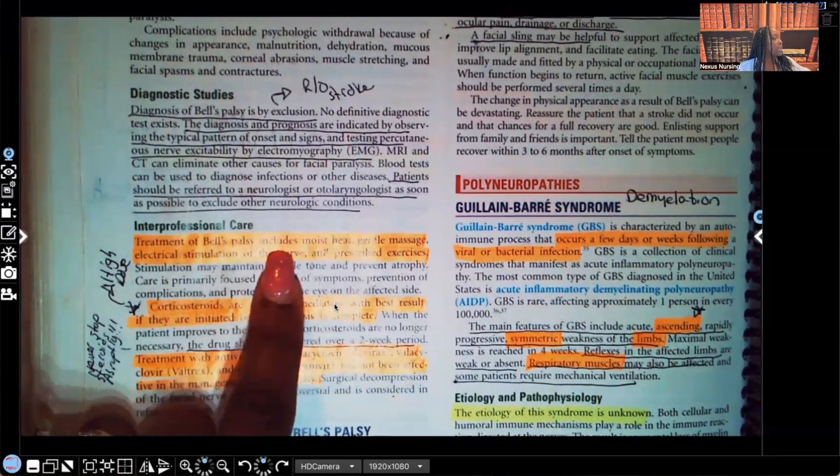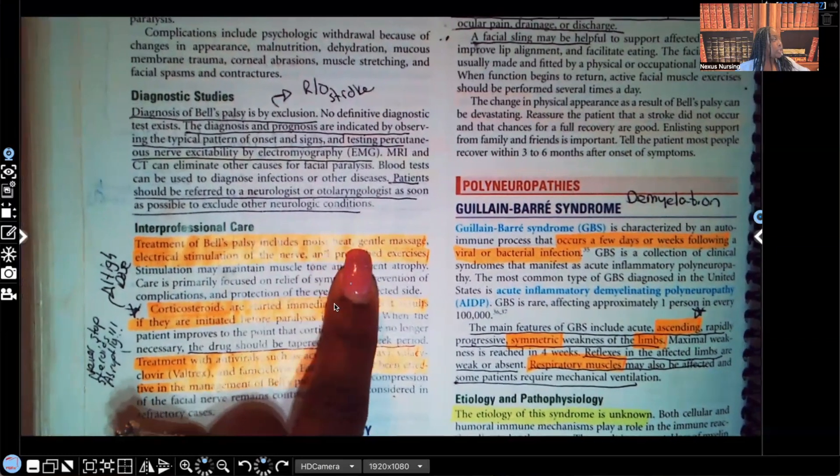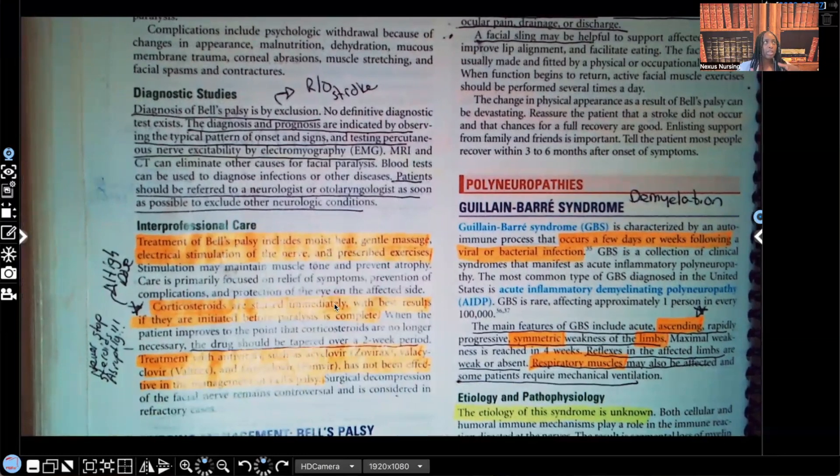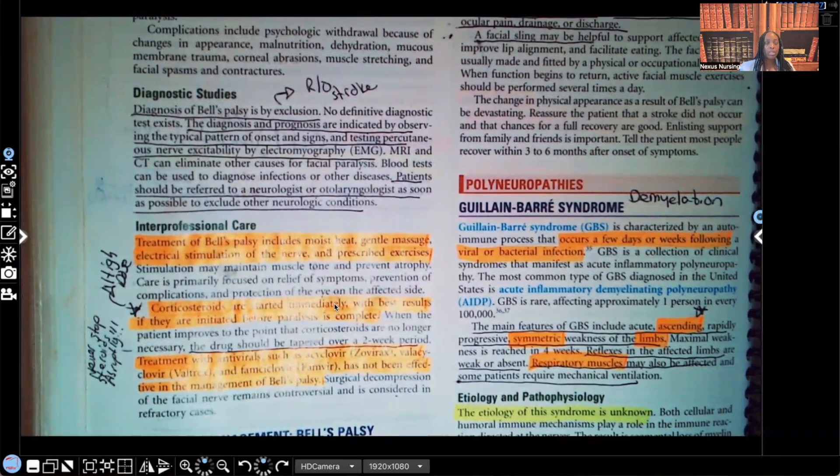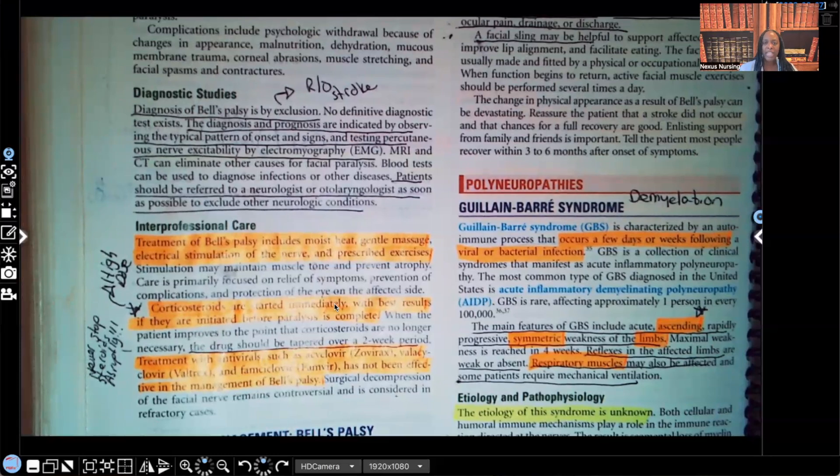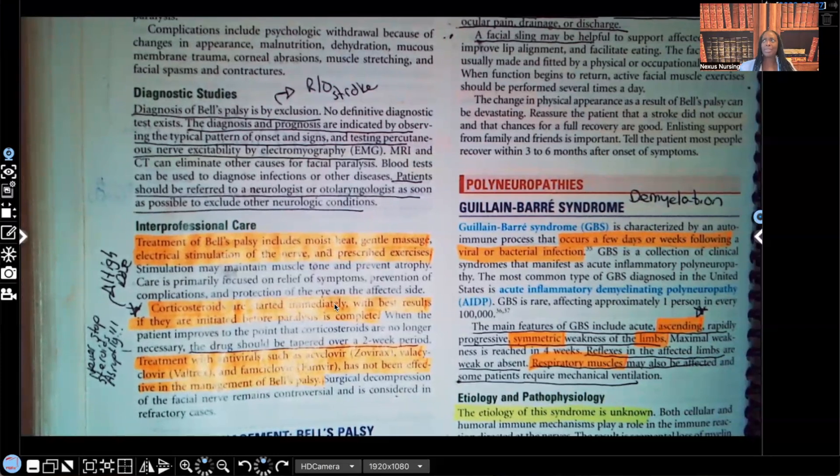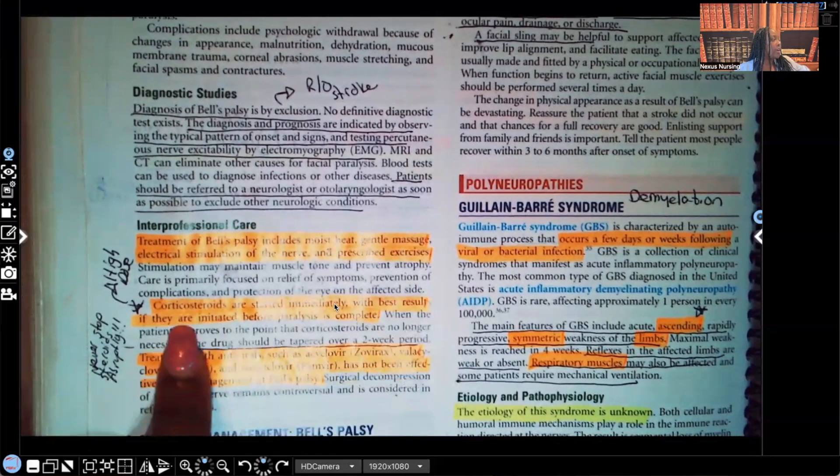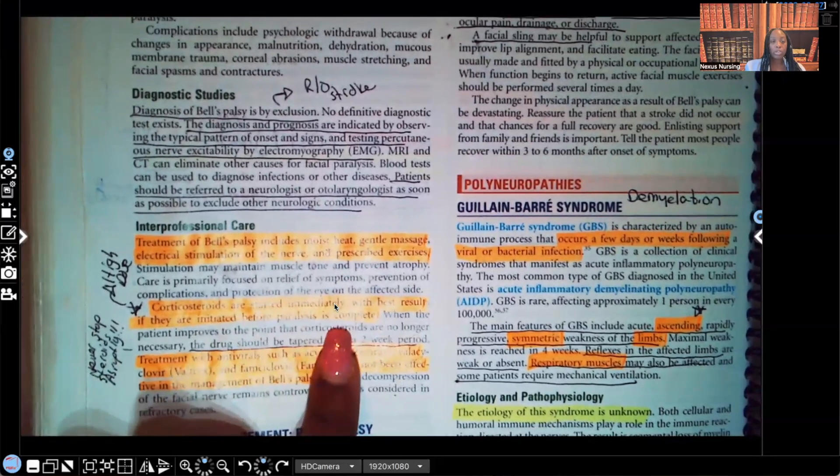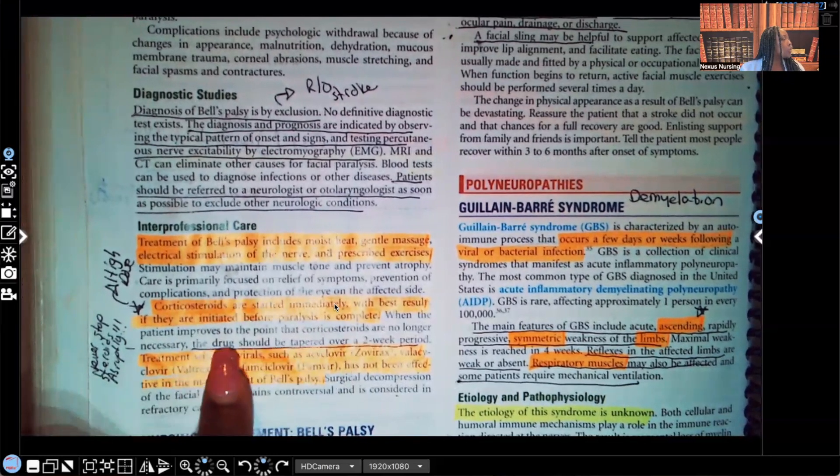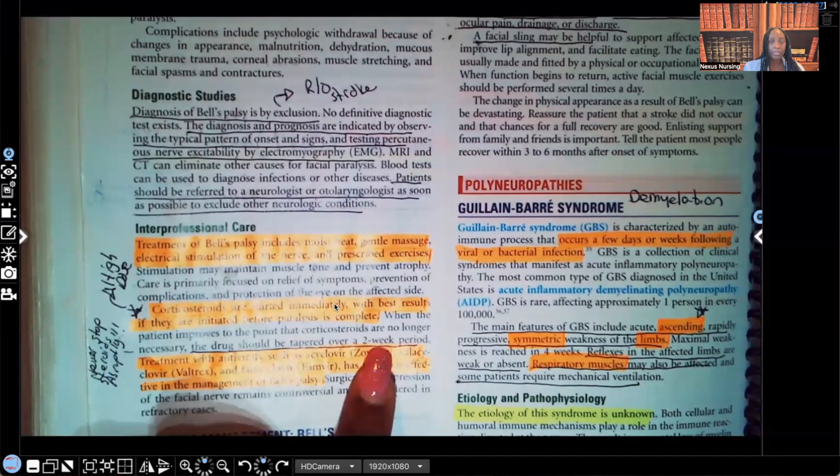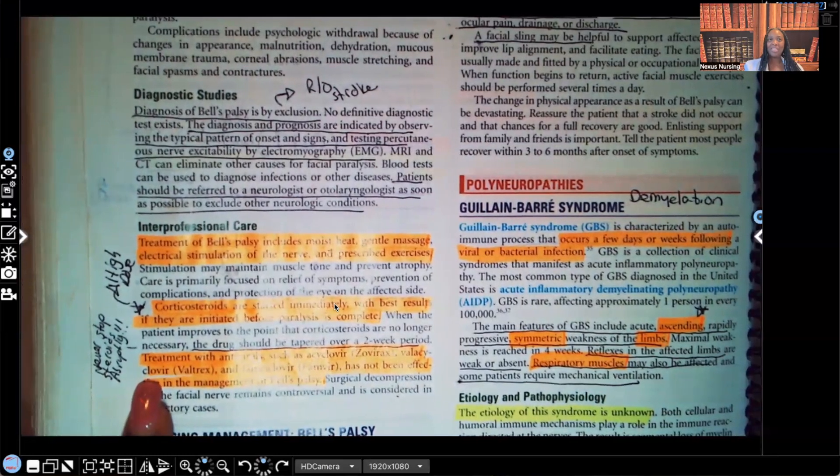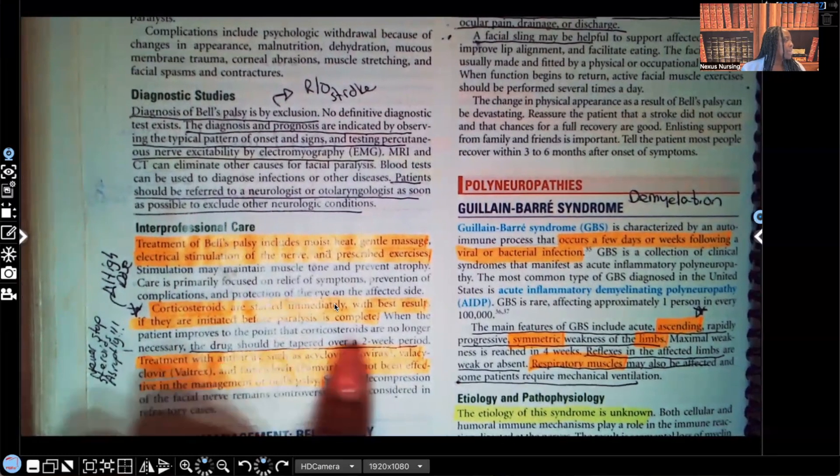It says treatment of Bell's palsy includes moist heat, gentle massage, electrical stimulation of the nerve, and prescribed exercises. Corticosteroids. When we were learning about Bell's palsy, what was one of the first things we learned about it that was causing this? Yes, cranial nerve 7, but what was happening to cranial nerve 7? Inflammation. What do corticosteroids do? They decrease inflammation. So it makes sense that corticosteroids would be ordered. Corticosteroids are started immediately with best results if they're initiated before paralysis is complete. And the corticosteroids are going to be very high dose. Drugs should be tapered over a two-week period. You guys know this. You never stop steroids abruptly. I wrote never stop steroids abruptly. Steroids are never stopped abruptly. Patient has to be weaned off.